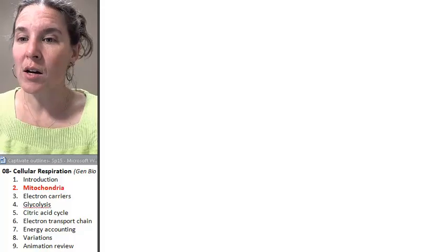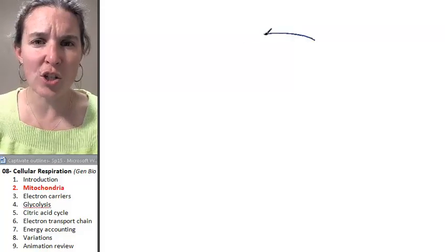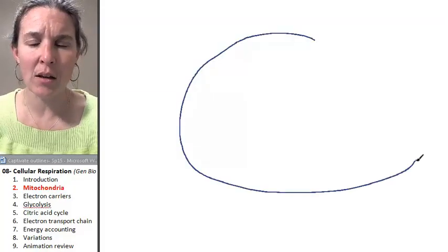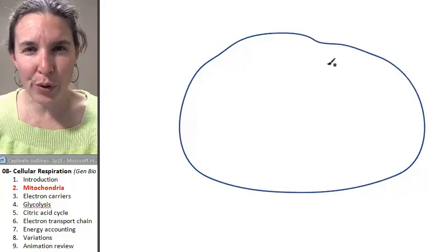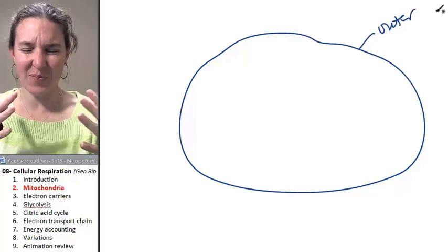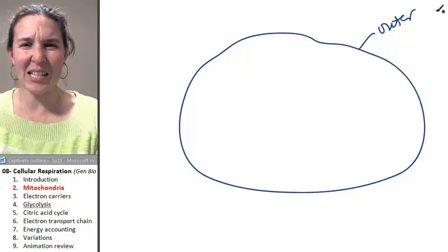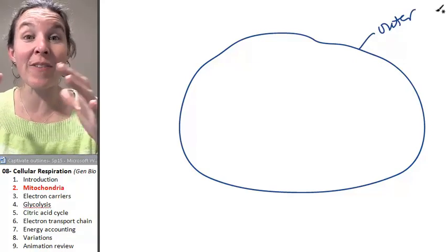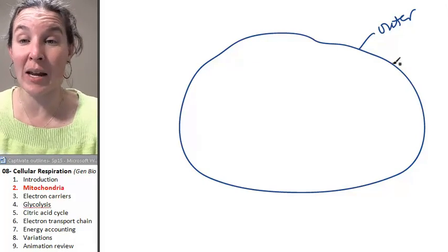First of all, my mitochondria has two membranes. It has an outer membrane, which makes sense. It's almost like the cell membrane that defines the space of the mitochondria.